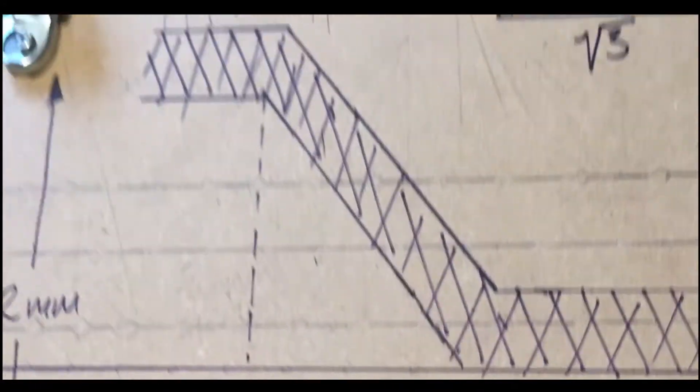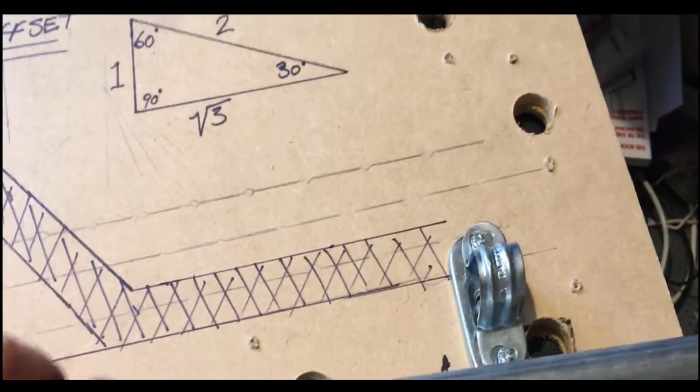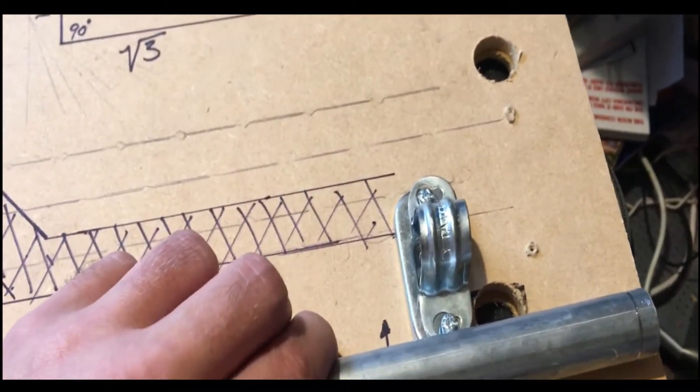What we do is take our conduit and mark 248 millimeters past that mark.